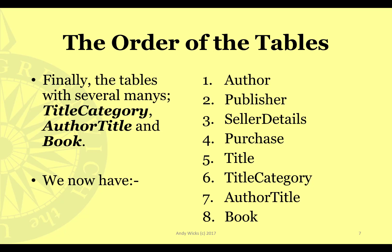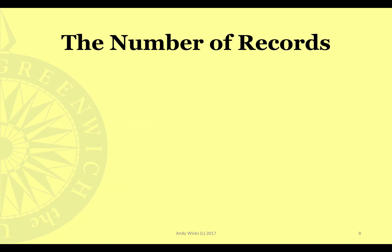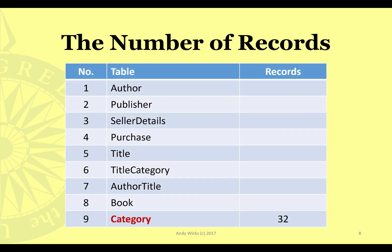Now we know which order we're going to organise the tables in. The next stage is to work out the number of records for each table. Here I have a table that shows the order of the tables, and the final column will show me the number of records I'm intending to have. I've added the ninth table, category, which has 32 records. So where do we start with the numbers of records? Well, we start with the thing that's probably the biggest.